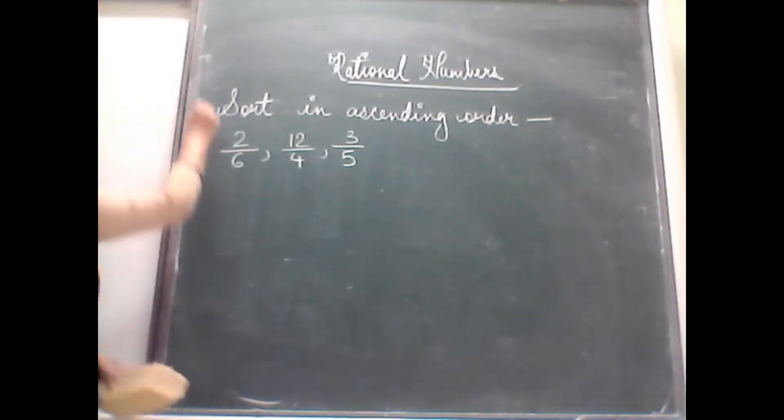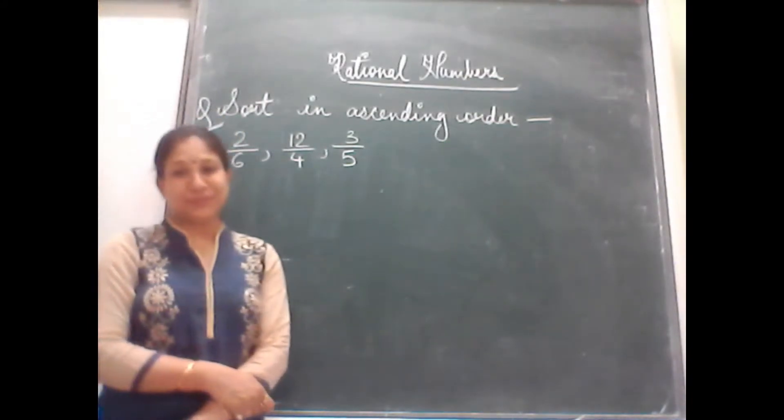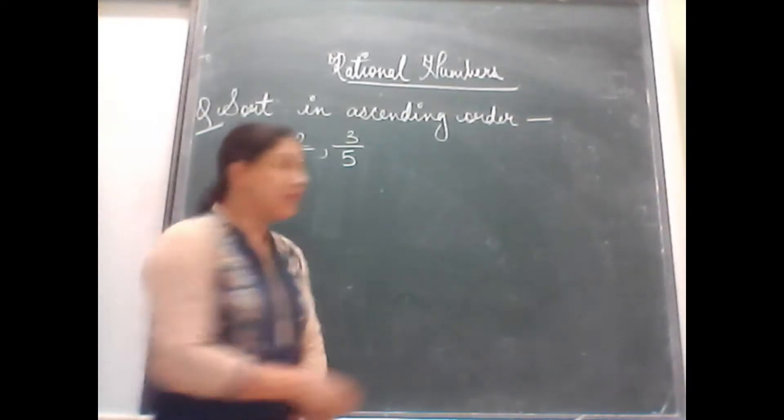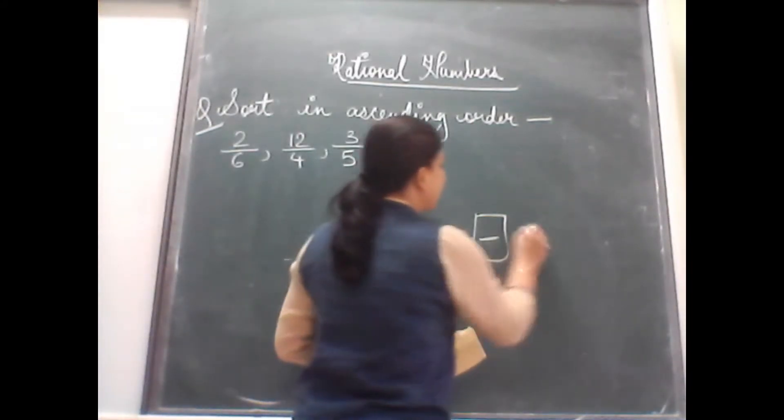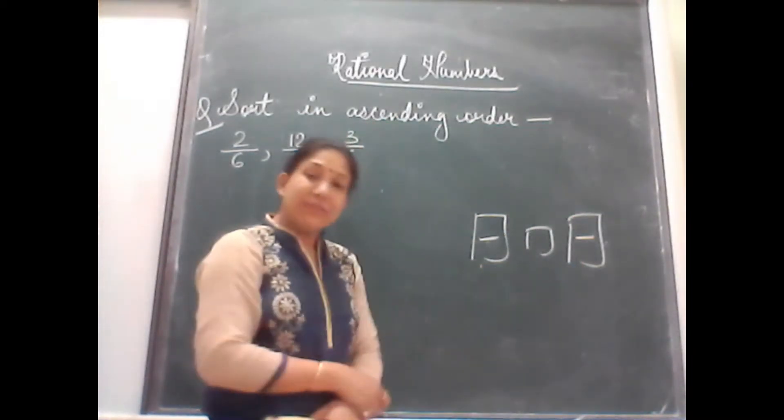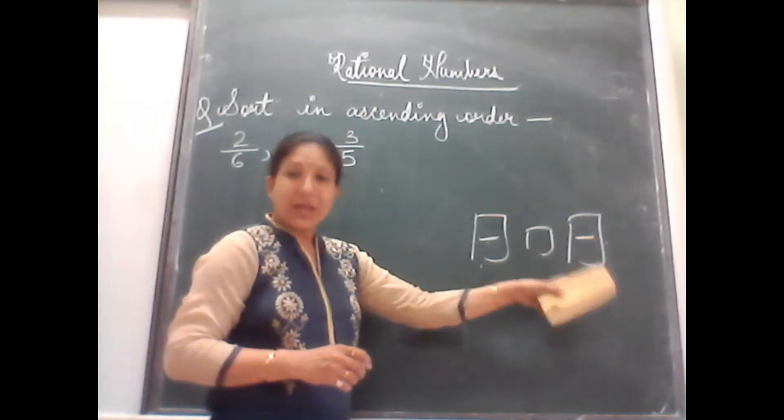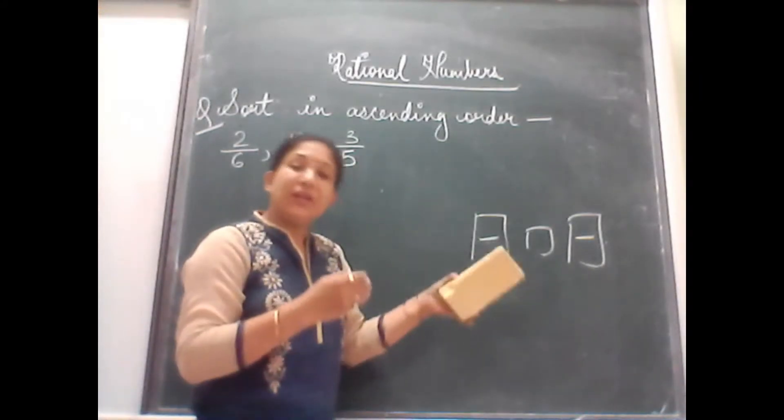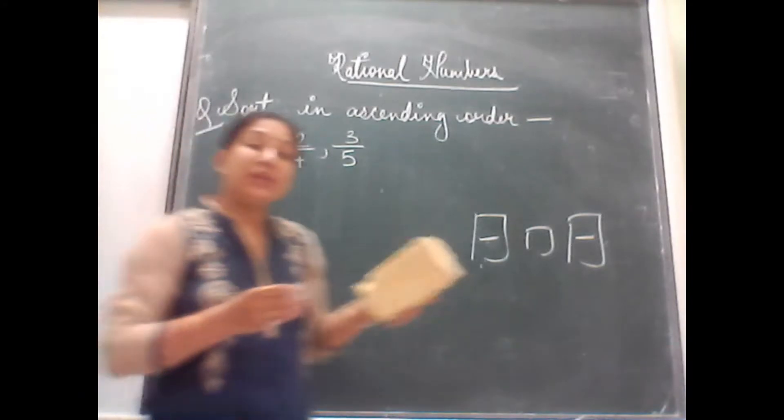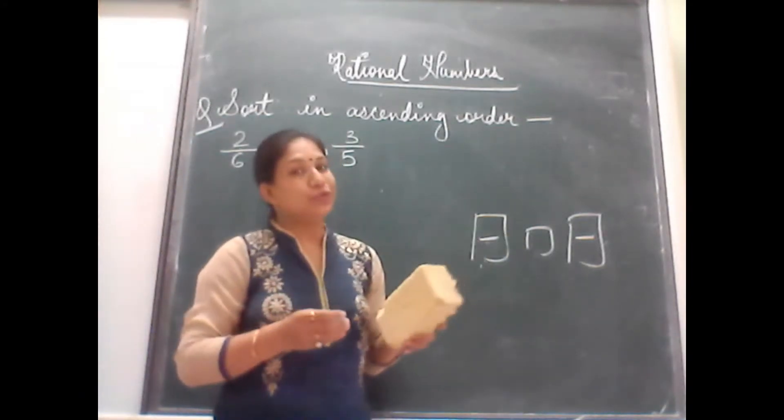Now take the first question. It is, sort it in ascending order. I hope you remember, yesterday when we were comparing two numbers, we used to take LCM of the denominators and then convert it into equivalent fraction and we saw they become like terms and then we used to compare.